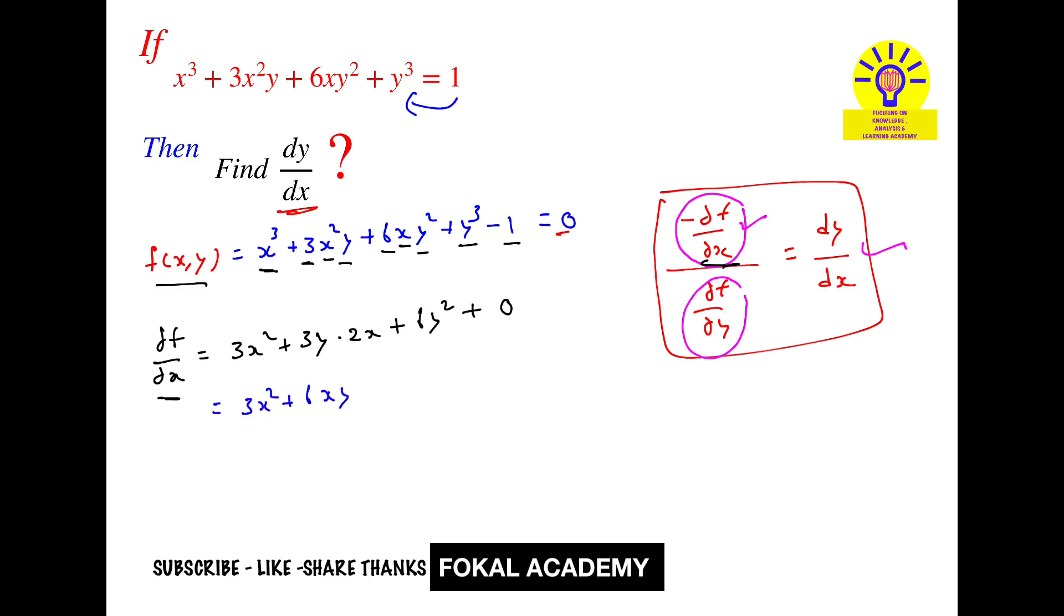Now similarly find ∂f by ∂y, which means differentiate this equation with respect to y only. Other terms where the main variables are constant, so it becomes - x cube is constant so derivative is 0, plus here 3x square is constant.